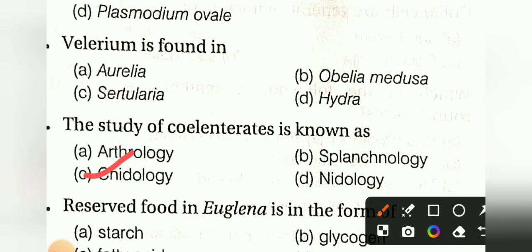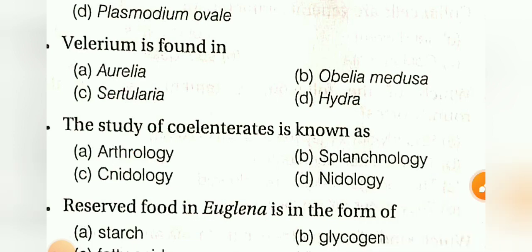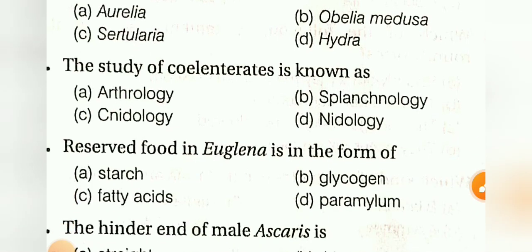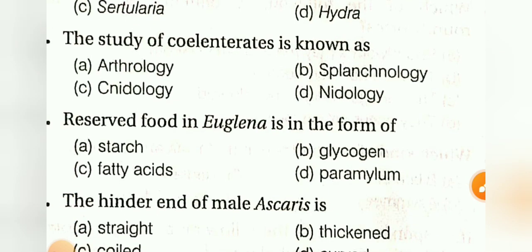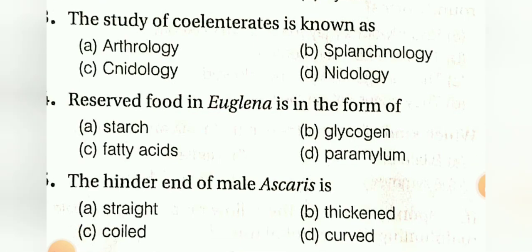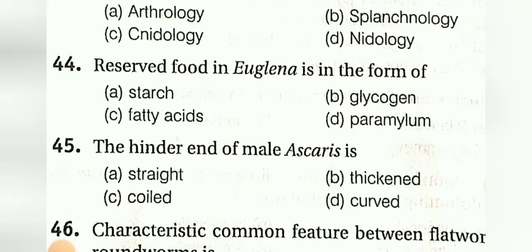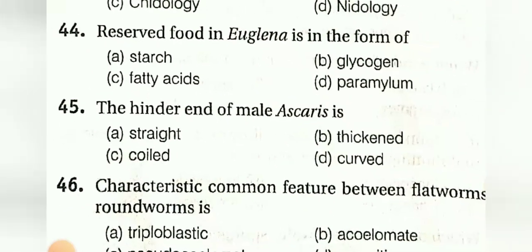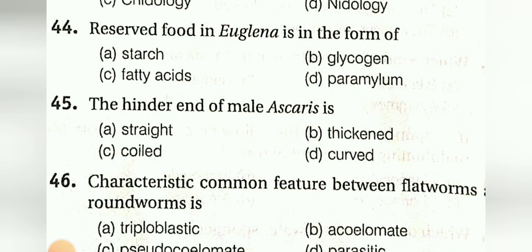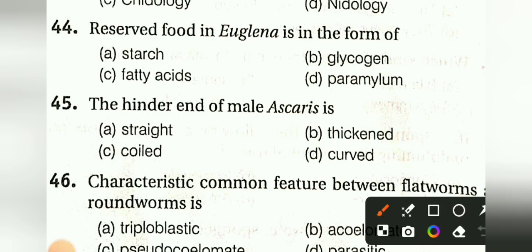Reserved food in Euglena is in the form of: starch, glycogen, fatty acid, or paramylon. The answer is paramylon.